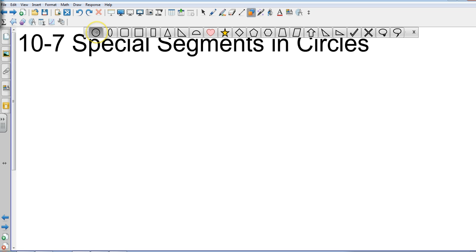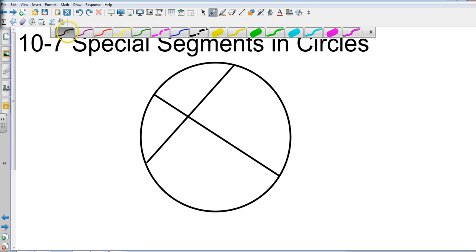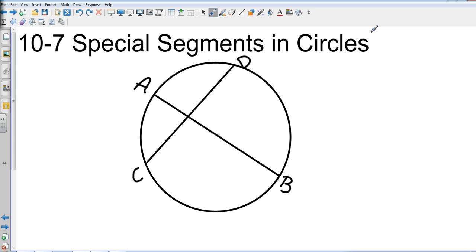Let's take a circle and put in two intersecting chords. Something like that. We'll go ahead and get a quick label on these. Let's call this A, B, and C, D, and let's say that they intersect at point E.